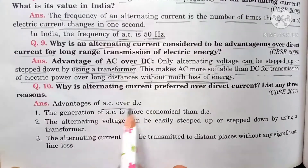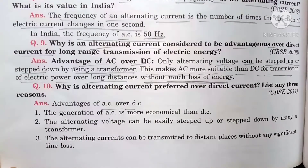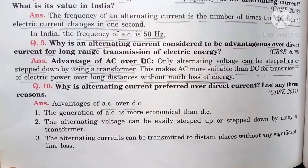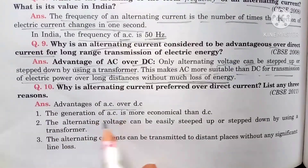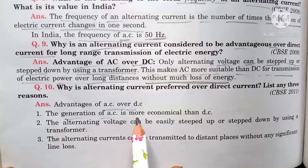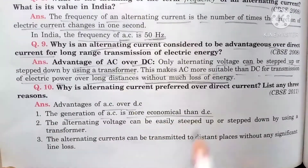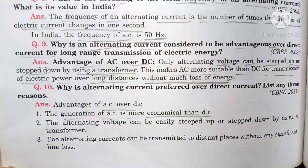To summarize the advantages of AC over DC: in India, alternating current is used in homes at a frequency of 50 hertz. The magnitude and direction of alternating current can vary. The generation of AC is more economical than DC.